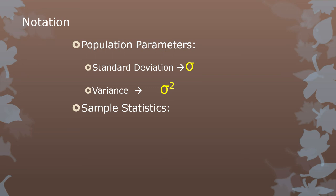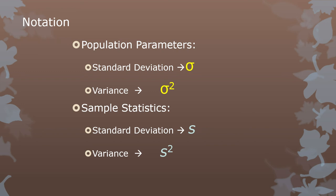With sample statistics we use different notation — just like the mean uses Greek lowercase mu for population mean but X-bar for sample mean. We use Greek lowercase sigma and sigma squared for population values. But the standard deviation of the sample we just call lowercase s, and sample variance is s squared. So sigma versus s, sigma squared versus s squared.